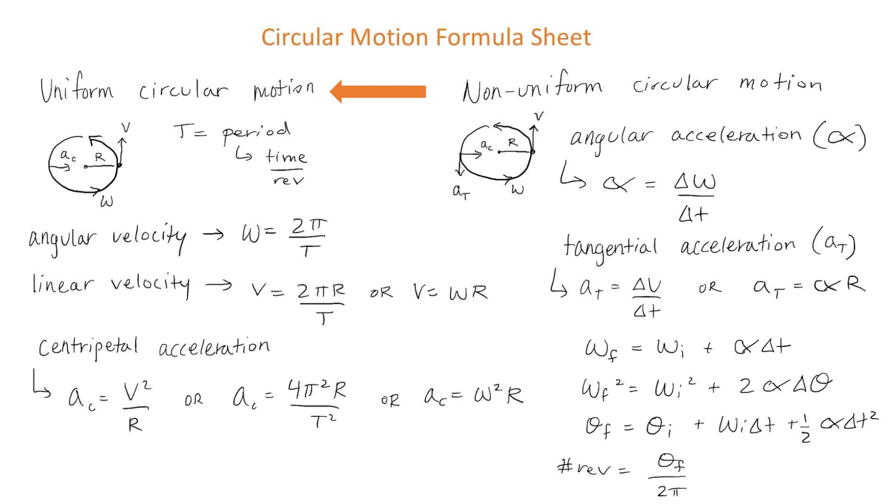Starting with uniform circular motion, we have an object that is moving in a circle with a constant speed. The object's circular motion will have a period, t, and t represents the time it takes to do one revolution.